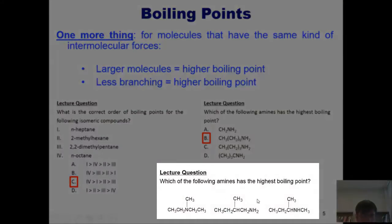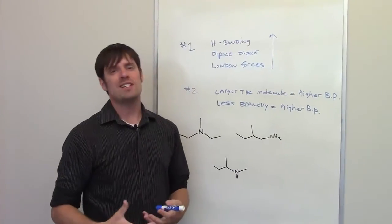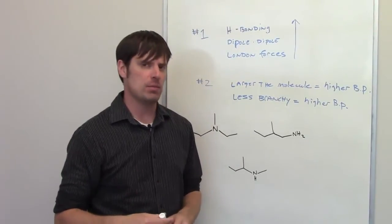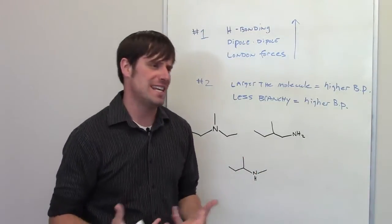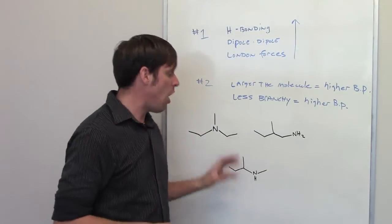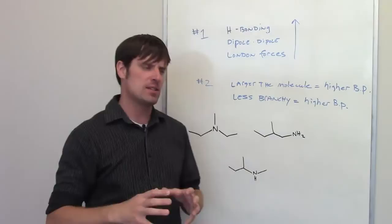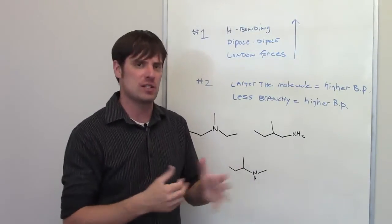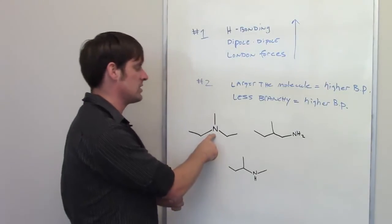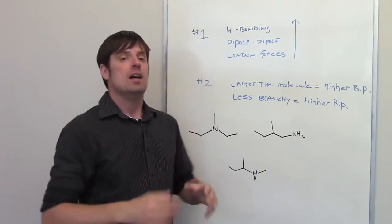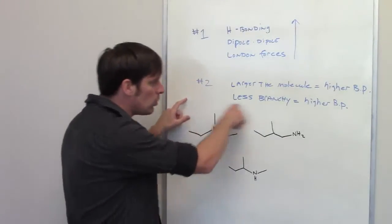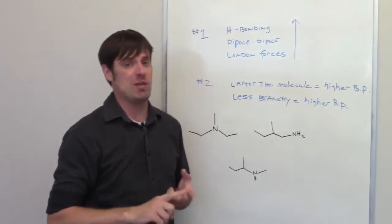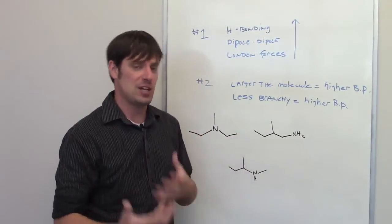The answer to this question down here is the middle one. For this question, I'm again asked which of these molecules has the highest boiling point. I've drawn the molecules as skeleton structures. As we look at them, you'll notice that all of them are constitutional isomers of each other — they all have the exact same molecular formula, just bonded together in slightly different ways. I've got a nitrogen in the center of one, on the end of another, and kind of in the middle of a third. You'll also notice that all of them have about the exact same amount of branching, so I can't use rule number two to determine which has a higher boiling point.